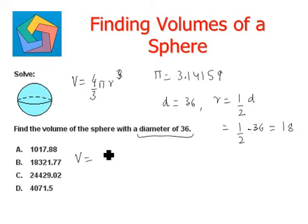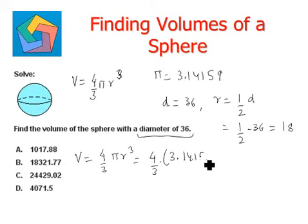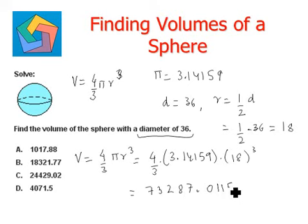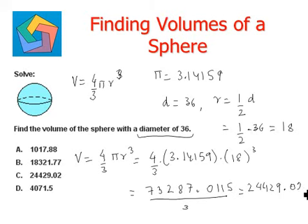Volume is given by the formula 4/3 π r³. We plug in: 4/3 × 3.14159 × 18³. 18 to the power of 3 means 18 multiplied three times, which gives 73287.0115 divided by 3. The final answer comes out to be 24429.02, which can be seen in option C.